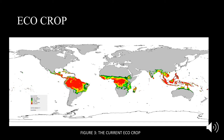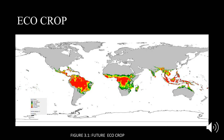Eco-crop represents areas that are the most suitable for a crop to grow. Figure 3 represents the current eco-crop suitability for papaya. By referring to the legend on the map, it is easy to see where suitability lies. Most areas in South America, parts of North America, Africa, and the islands of Asia are the most suitable. Figure 3.1 represents the future suitability of eco-crop. Comparing current and future, we can see that certain areas have lost their suitability, such as North America.